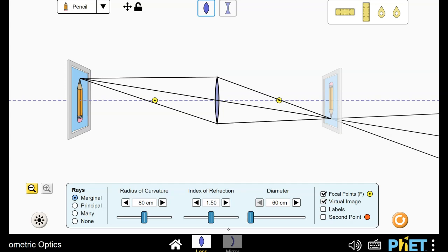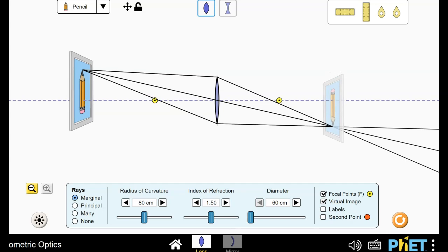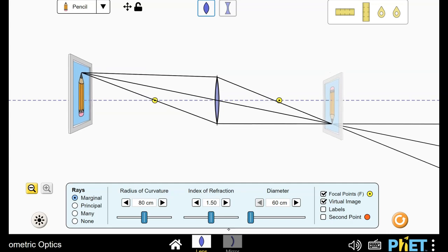The second rule is that rays that pass through the center of the lens do not bend at all. And the third rule is that rays that seem to pass through the focal point before they hit the lens emerge parallel to the principal axis.